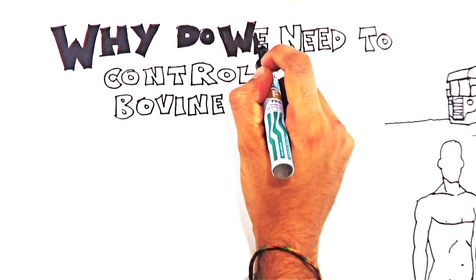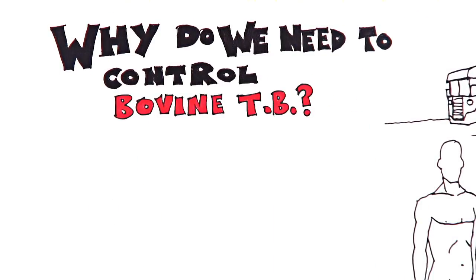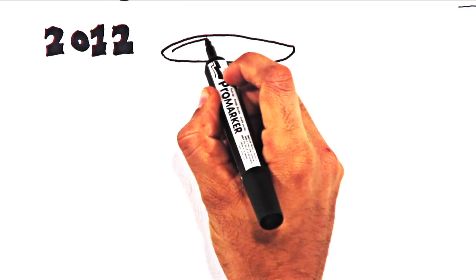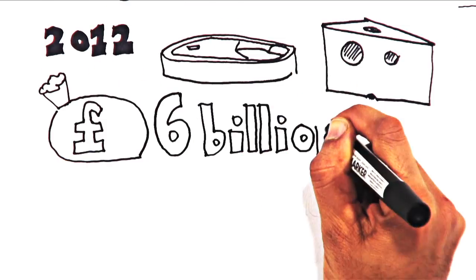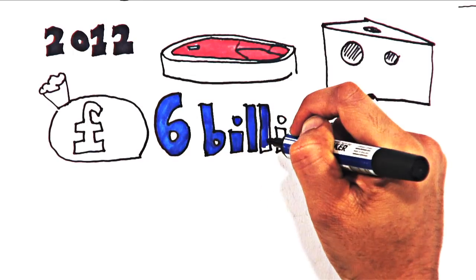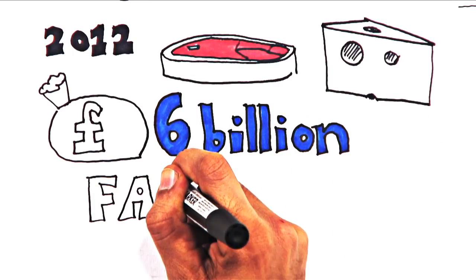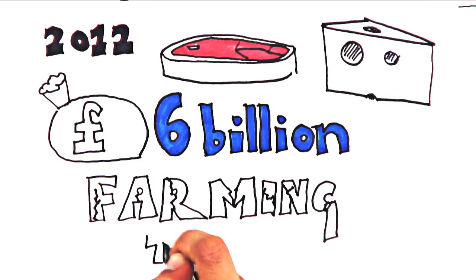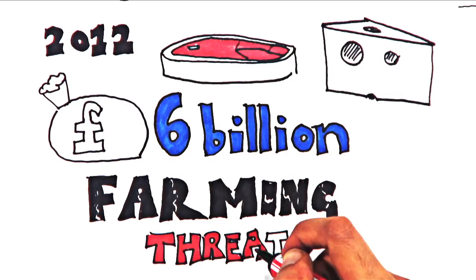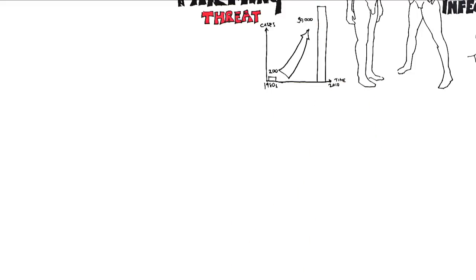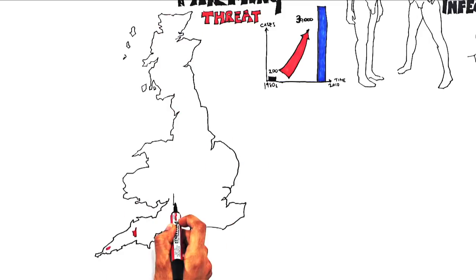Why do we need to control bovine TB? In 2012, the UK's beef and dairy industries were worth £6 billion. However, bovine TB is threatening the future of farming in England. Over the last three decades, the disease has increased from around 200 to 30,000 cattle cases per year and spread to new areas of the country.